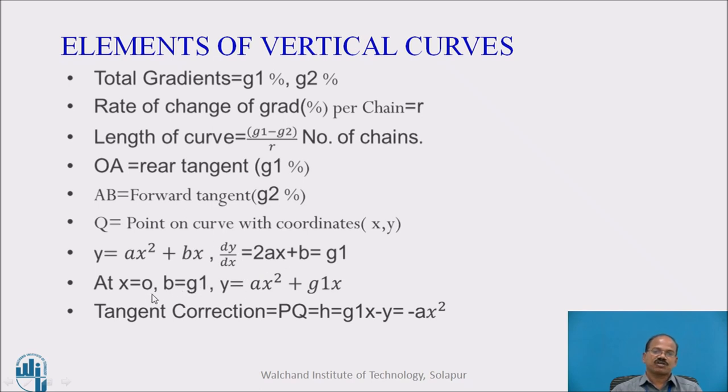When we will be substituting X = 0 and B = G1, we will get the formula as Y = AX² + G1X. With the help of this formula, the rest of the setting of vertical curve is possible. If we will further differentiate this function dY/dX = 2AX + B, we will get d²Y/dX² = 2A.